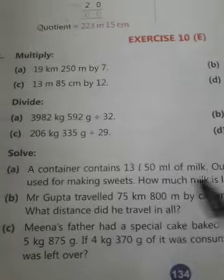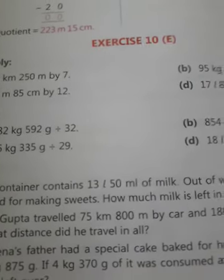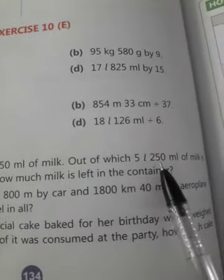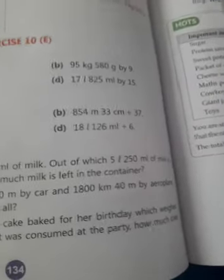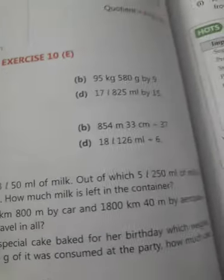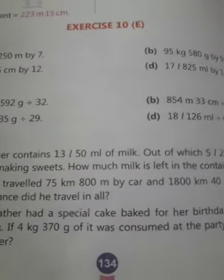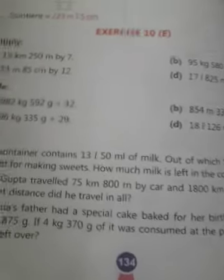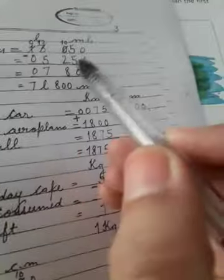The container has 13L 50ml of milk. 5L 250ml milk has been used for making sweets. We need to find how much milk remains in the container. So what we will write: total milk in container. We will mention liter and milliliter. Total milk is 13 liter 50 milliliter. Milk used for sweets is 5 liter 250 milliliter.